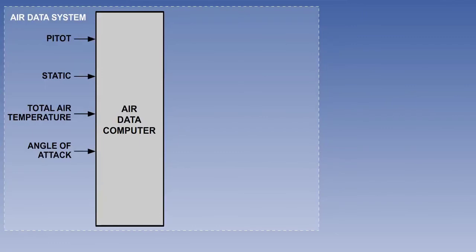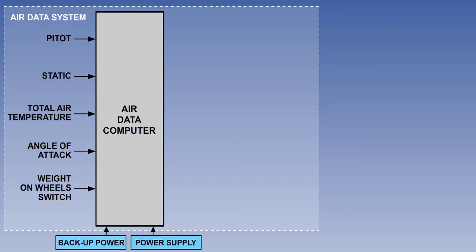Here you see a typical fully integrated system, with our usual inputs of pitot, static, total air temperature, and alpha. Another input is a detector to show whether there is any weight on the wheels. We will explain its purpose shortly. The inputs are completed with the addition of a power supply and a source of backup power.